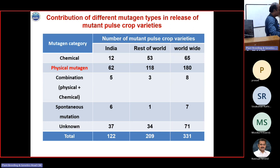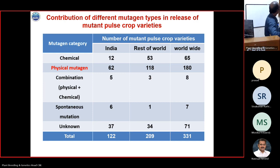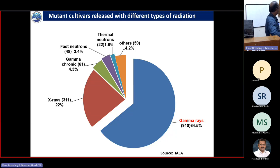Coming to the contribution of physical mutagens in the development of crop varieties: out of 122 crop varieties released in India using mutation breeding, maximum varieties are released through physical mutagens, especially through gamma rays and X-rays. For the rest of the world it is also very high — around 118. Among different combinations of physical and chemical mutagens, physical mutagens are giving more, and are used to release more varieties across the world. Almost more than 90% of varieties released through mutation breeding experiments are through gamma rays.